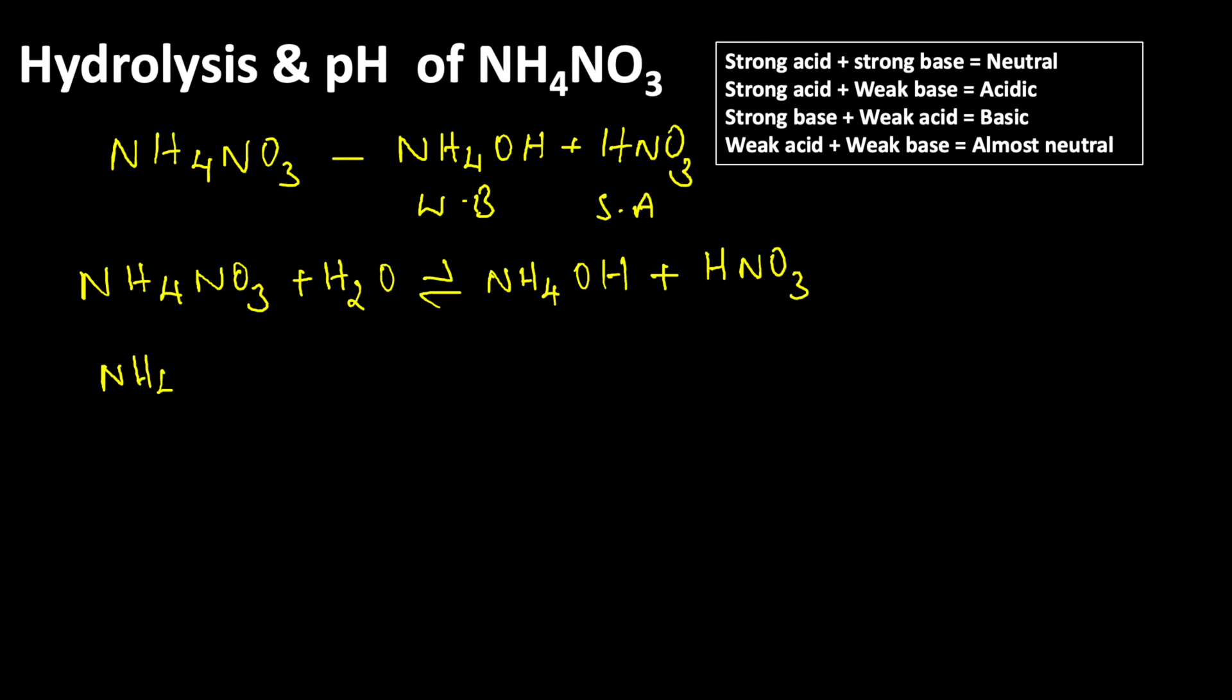We can write it like NH4+ plus NO3- plus H2O yields NH4OH plus H+ plus NO3-. NH4OH is a weak base, so it stays in unionized form in water, while HNO3 gives H+ and NO3-.